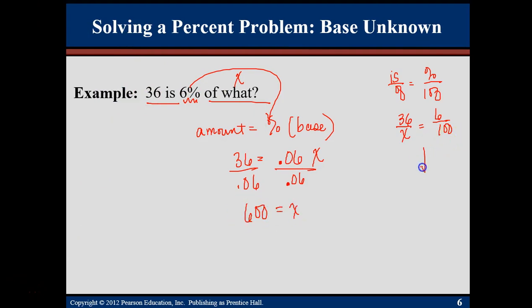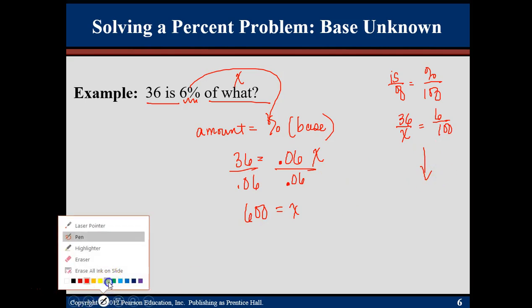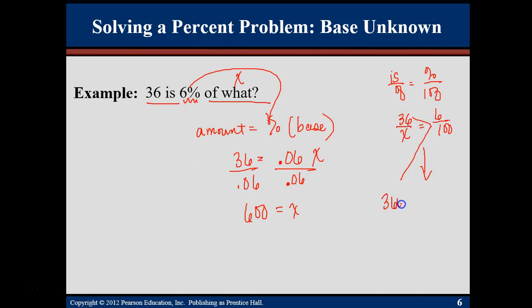If I wanted to solve using a fraction, I would do something called cross multiply. So it's 36 times 100, which is 3600, equals 6 times x, which is 6x. I know I did the right way by getting the diamond in the middle. Divide both sides by 6 and you can see that you'll get the same answer. Either method is completely fine.